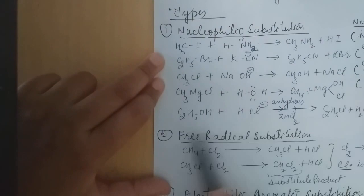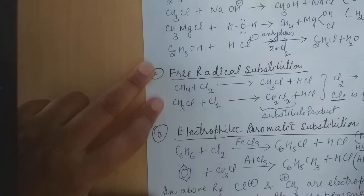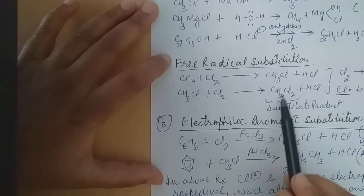Free radical substitution — for example, chlorine after homolytic fission forms free chlorine radicals. These chlorine free radicals, when they attack on the alkanes, form alkyl halides and give the substituted product. The reaction is: methane after chlorination produces CH3Cl. And CH3Cl on further chlorination forms CH2Cl2 — methylene dichloride — which is the substituted product.